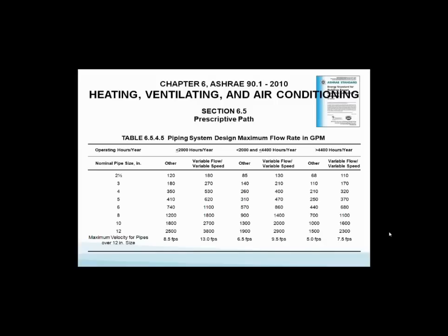This is a prescriptive path for pipe sizing for condenser water and chilled water. They're giving you pipe sizes. Take a quick look - they're giving you hours of operation per year and the maximum allowed flow in GPM through the pipe. I've never seen this done before and most engineers are not even aware. Going across the top, you'll see less than 2,000 hours to over 4,400 hours, and that changes your pipe size. Plus, it's pretty much constant flow or variable flow. Now you've got another code coming on pipe sizing that you're going to have to meet. You have no choice.